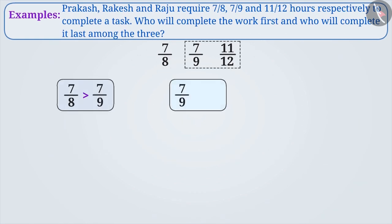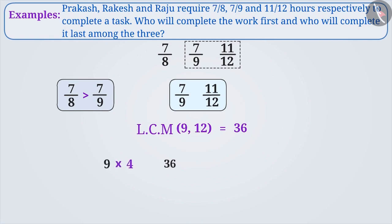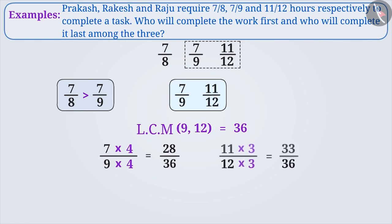If we compare 7 by 9 and 11 by 12, then neither the denominators are equal nor the numerators. So, we will use LCM here. Since the LCM of 9 and 12 is 36, we will make both the denominators equal to 36. Since 4 times 9 is 36, we multiply the numerator and denominator of 7 by 9 by 4 to get the fraction 28 by 36. Similarly, 3 times 12 is 36, so we multiply the numerator and denominator of 11 by 12 by 3 to get 33 by 36.